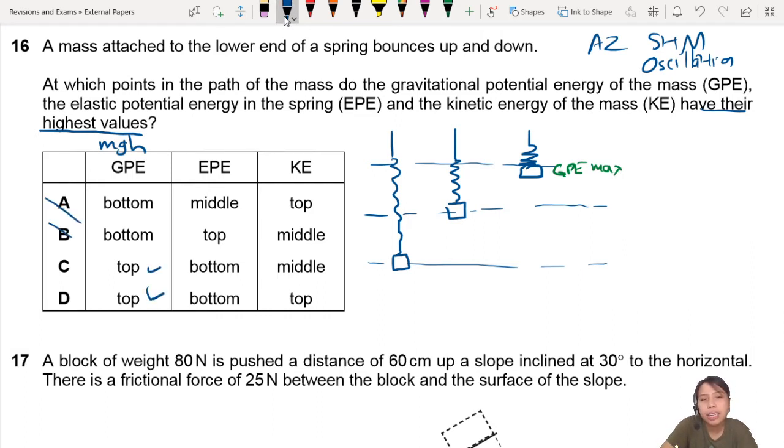Elastic potential energy will depend on the extension of the spring. So is the extension of the spring maximum down there or on top? Actually, down there is the maximum extension. So here will be EPE max. So bottom.